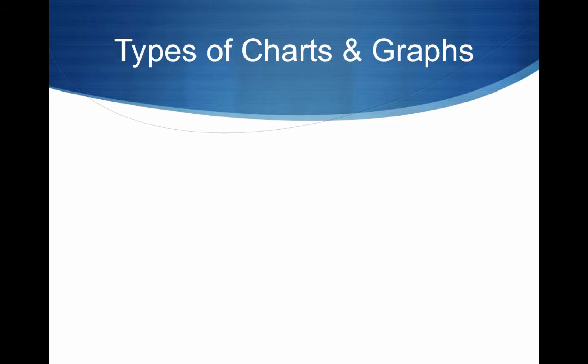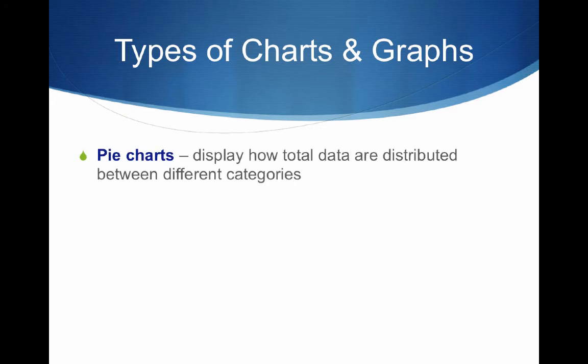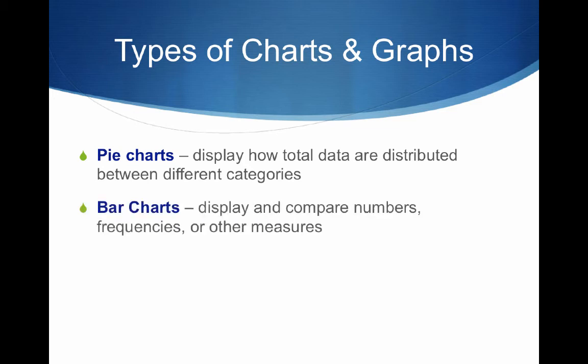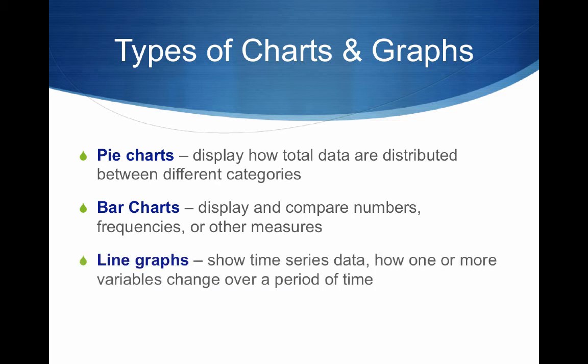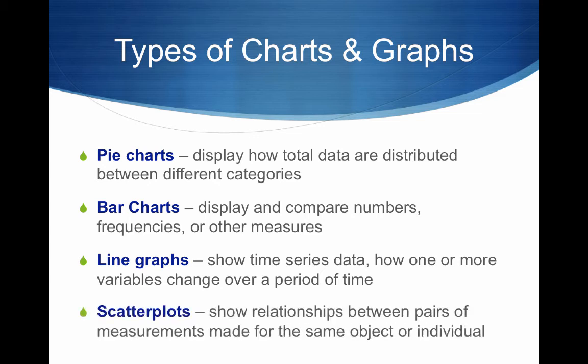There are a number of types of charts and graphs. Pie charts are used when displaying how the total data are distributed between different categories. Bar charts help you display and compare numbers, frequencies, or other measures. Line graphs show time series data — how one or more variables change over a period of time. Scatter plots show the relationship between pairs of measurements made for the same object or individual.